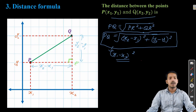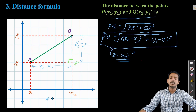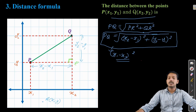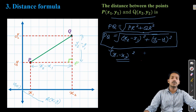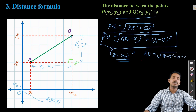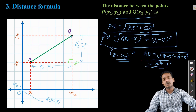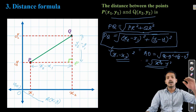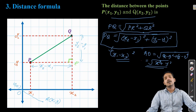One more thing to remember: if a point A has coordinates (x, y) and you need to find the distance from the origin O(0, 0), the formula simplifies. AO = √[(x − 0)² + (y − 0)²] = √(x² + y²). So the distance from a point to the origin is simply the square root of the sum of the squares of the two coordinates.